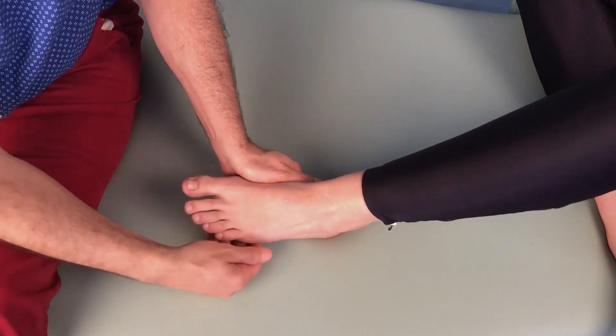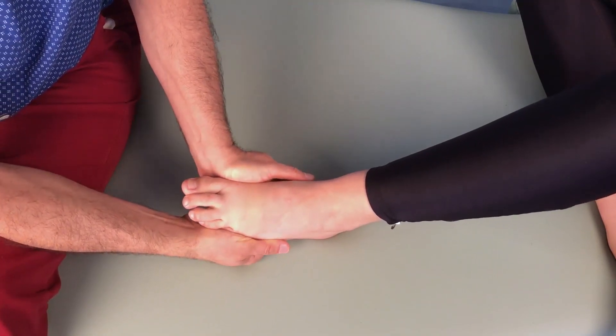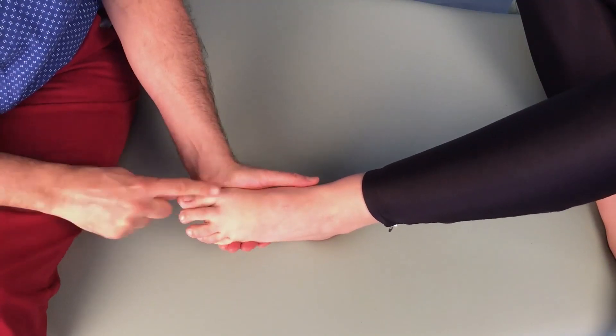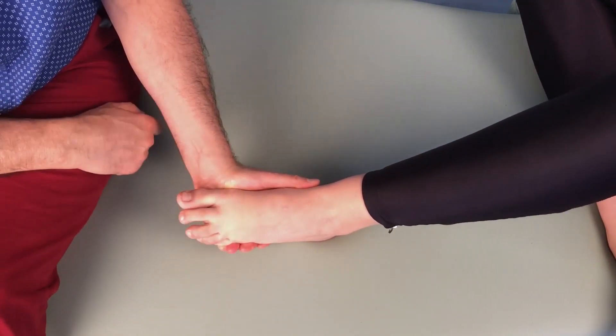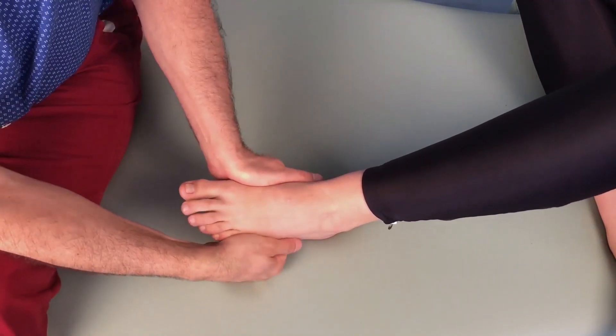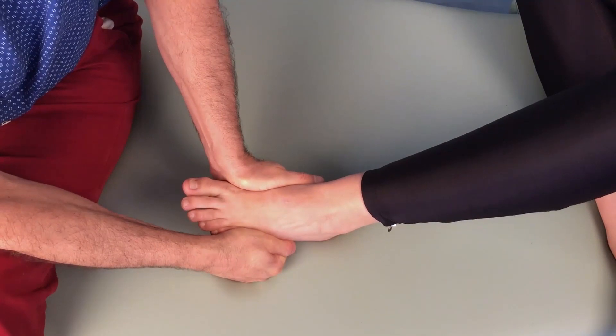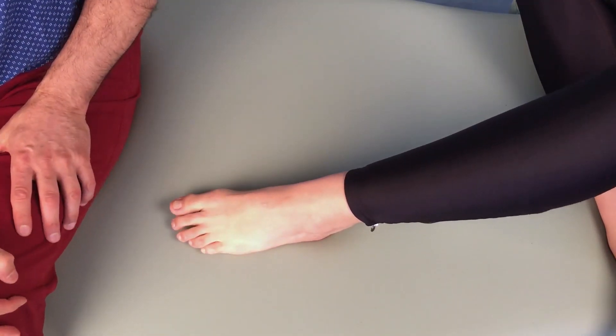One note about this: it's very important when you squeeze that you don't simply round the foot out and increase the concavity of the transverse arch here. It's important that we actually squeeze the metatarsals together. That is Morton's test for Morton's neuroma.